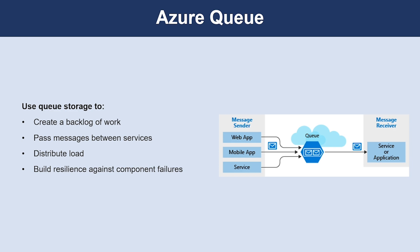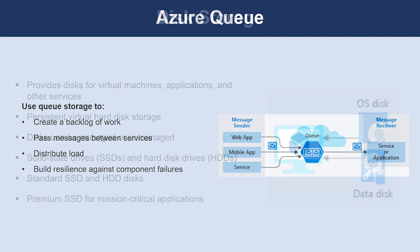Typically, there are one or more sender components and one or more receiver components. Sender components add messages to the queue, while receiver components retrieve messages from the front of the queue for processing. You can use queue storage to create a backlog of work, pass messages between different Azure web services, distribute load among web servers, manage bursts of traffic, or build resilience against component failures when multiple users access your data at the same time.